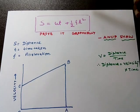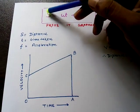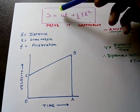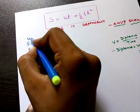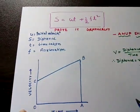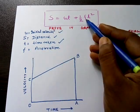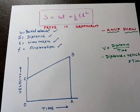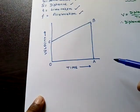Let's start. Here, S stands for distance traveled, u stands for the initial velocity, t stands for the time taken, and f stands for the acceleration.